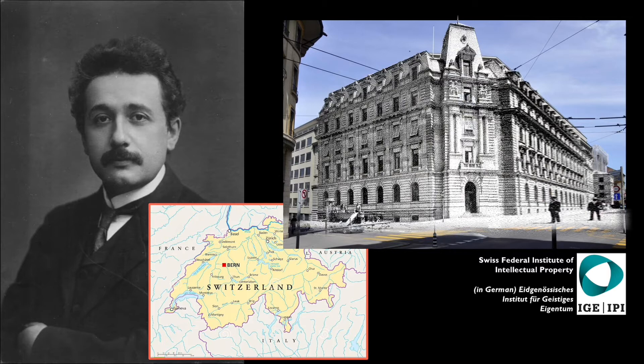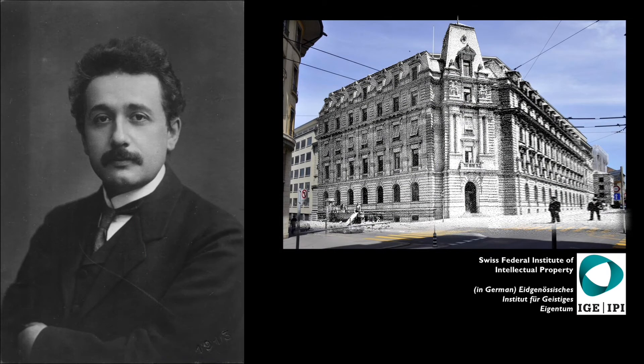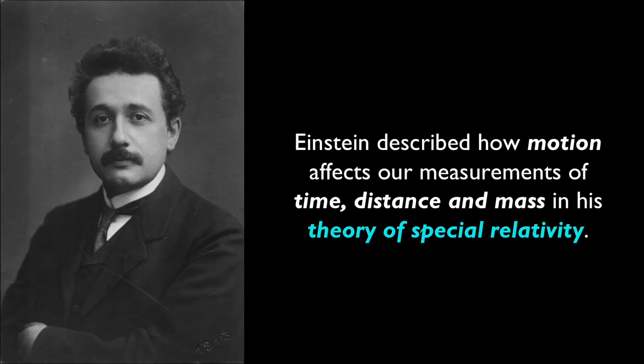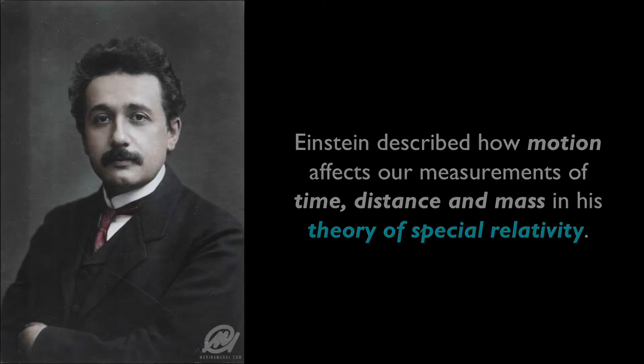He came up with his various thought experiments that helped him see motions differently. He described that your experience of motion and time is unique to you. It's relative to the experiencer. Specifically, he said that motion affects our measurements of not only time, but distance and mass as well. This concept was the basis of his theory of special relativity. All that by just thinking about it.